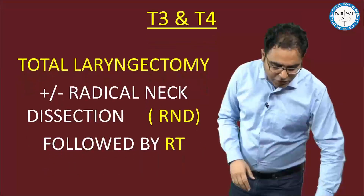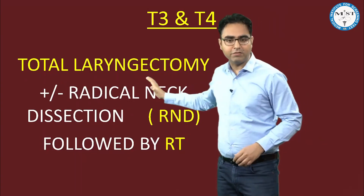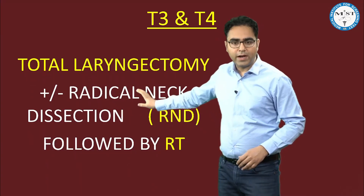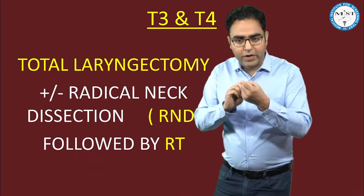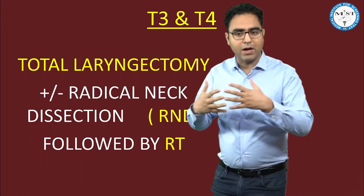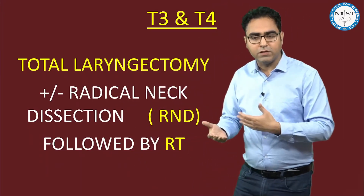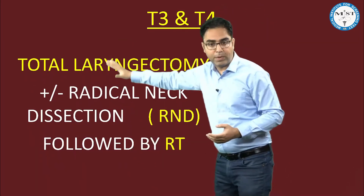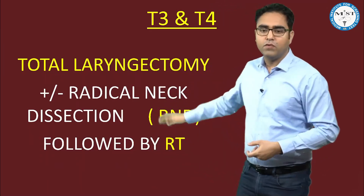Now T3 and T4 — the standard therapy is total laryngectomy plus/minus radical neck dissection followed by radiotherapy. If there is a neck node also, then you do radical neck dissection followed by radiotherapy. T3: vocal cord fixed, immobile, or space involved (pre-epiglottic or paraglottic). T4: invasion of thyroid cartilage, thyroid perichondritis, or extralaryngeal neck structure involvement. For all these bigger tumors, you have to go for total laryngectomy plus/minus radical neck dissection followed by radiotherapy.